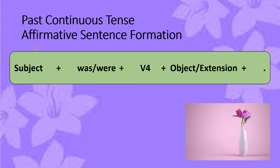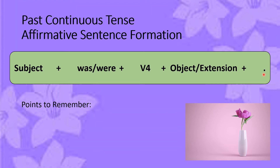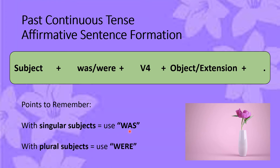Let's now talk about the affirmative sentence formation of past continuous tense. First comes the subject at the start of the sentence. Then you add 'was' or 'were' as helping verbs, also known as auxiliary verbs. Then you add the fourth form of the verb — if you add 'ing' at the end of the first form of the verb, it becomes the fourth form, also called the present participle. Then you add the object or extension along with a full stop. Remember: with singular subjects use 'was,' and with plural subjects use 'were.'